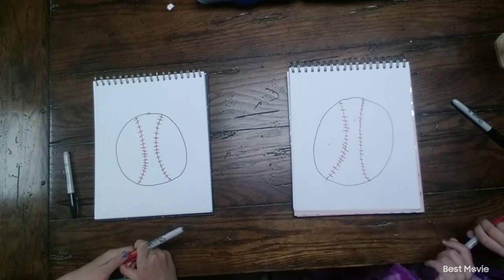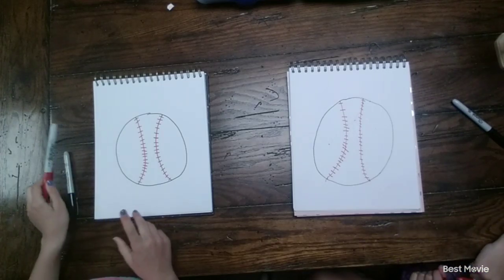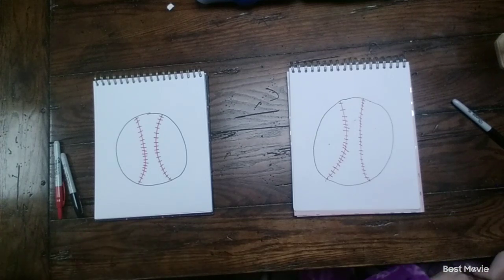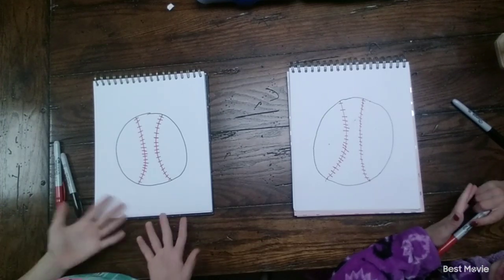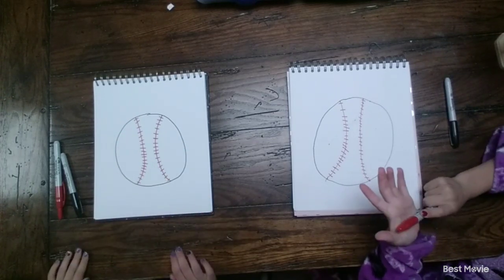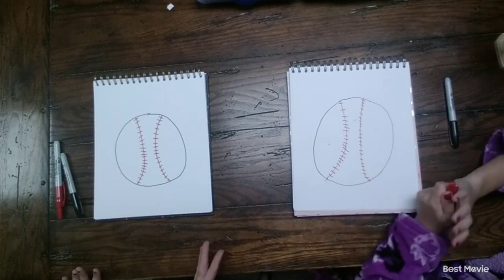So we're basically done our baseball. Now this is a really simple and quick draw to do. It won't take that much time, and you won't really need to color it unless you want to add texture and shading and stuff. So that's basically it.